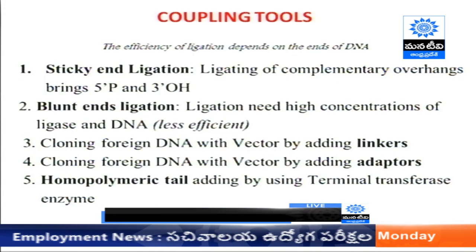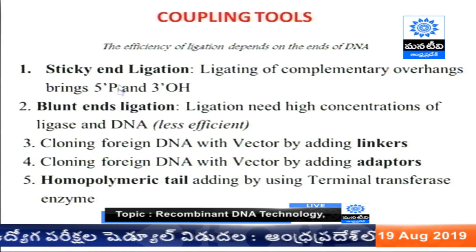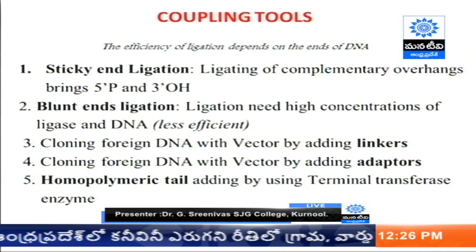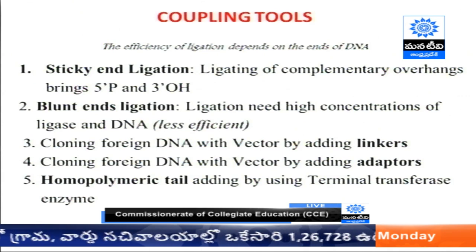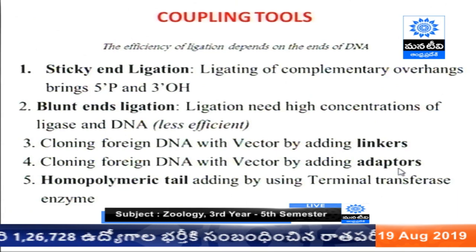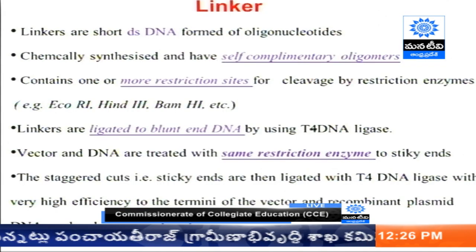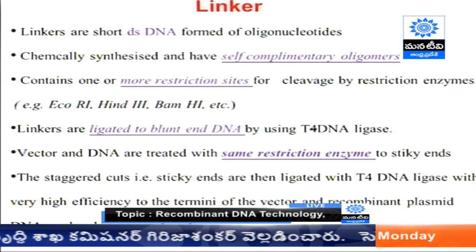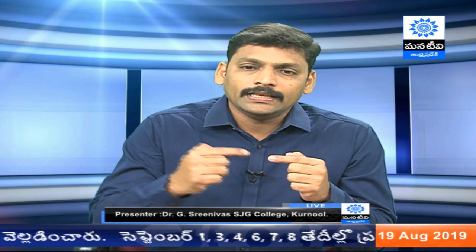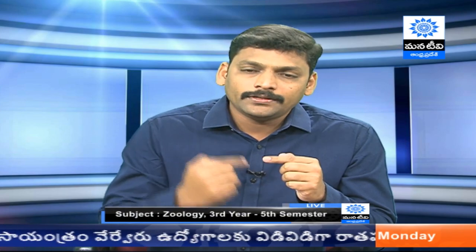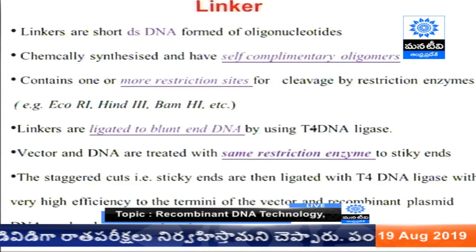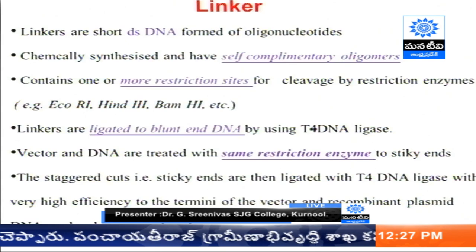What are adapters and linkers? These are called coupling tools. There are sticky ends and blunt ends, and both have to be ligated to the plasmid. Some restriction enzymes cut in a blunt way and some in a sticky way; they can be ligated using linkers and adapters. Another type is homopolymeric tailing, which has a long sequence of A and T or G and C. Linkers are double-stranded DNA, self-complementary oligomers with a specific restriction site. Adding a linker to a desired DNA means it will cleave in the same pattern so it can be added to the plasmid, and linkers are ligated using T4 DNA ligase.